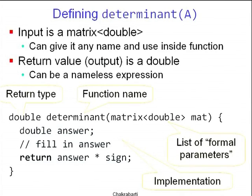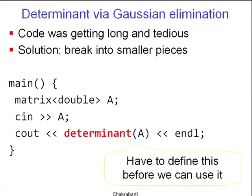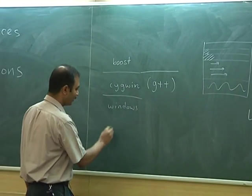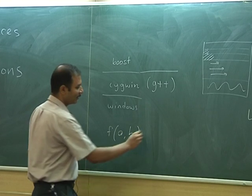What should determinant do? Clearly it accepts as input a matrix of doubles and returns a value which is a double. How is the function actually declared? You first specify the return type — double — then give the name of the function, and then there will be this formal parameter which says the input is a matrix called mat. As you have seen already in code fragments, it doesn't matter what you call mat. Even if it's the same name as something you invoke it with, it's actually locally defined inside the function.